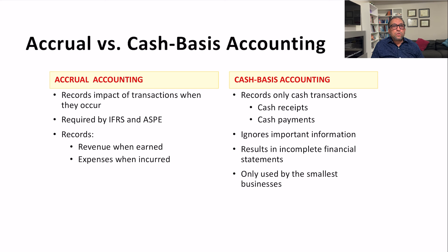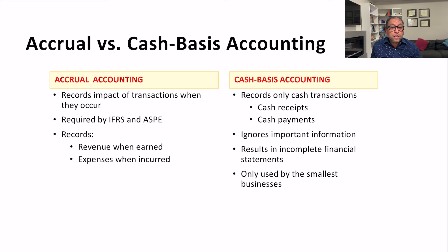Because of the simplicity of the cash basis system, it does not work for large corporations — it is only suitable for very small-scale businesses. It ignores important information and results in incomplete financial statements. For corporations, tax authorities calculate real income and tax it accordingly. For sole proprietorships or small partnerships, the owner's income is taxed rather than the entity's, so cash basis can work there. But for corporations, it is not sufficient.